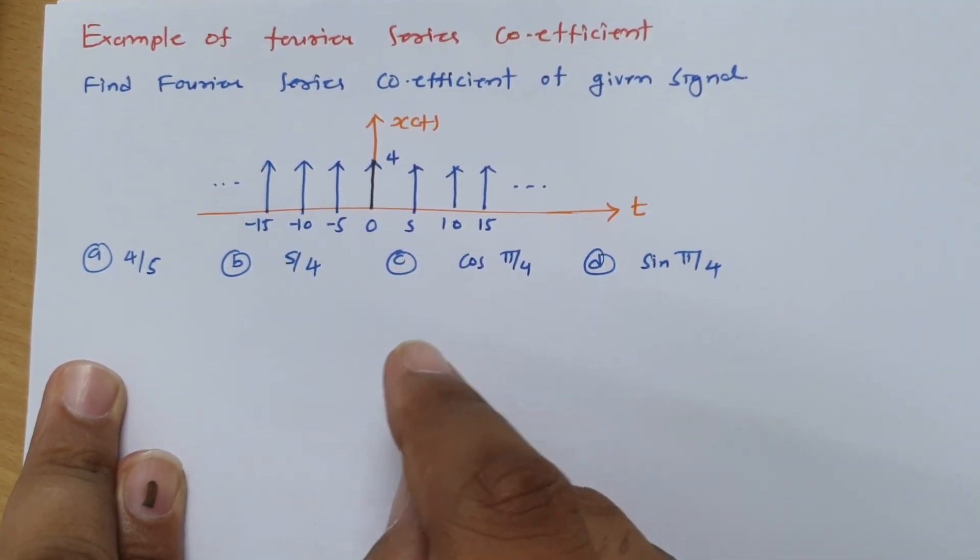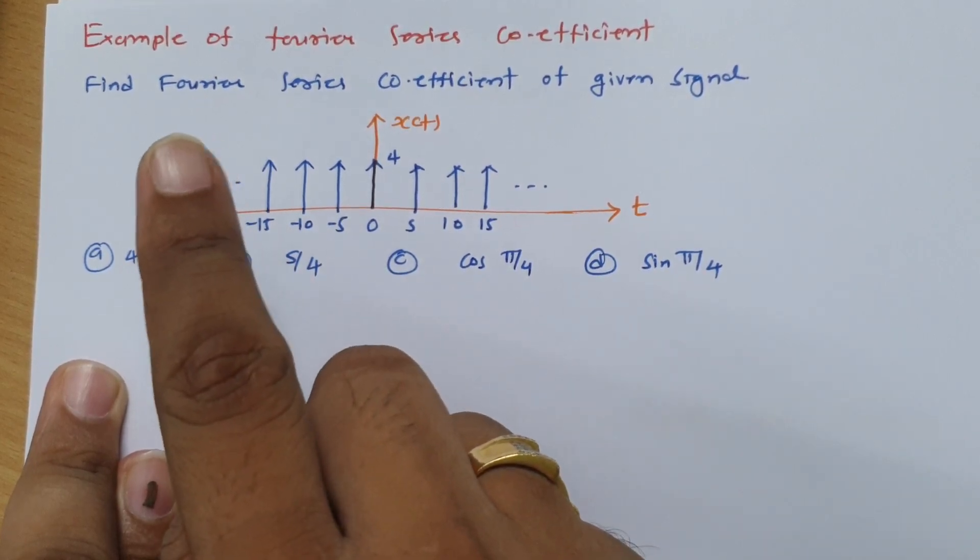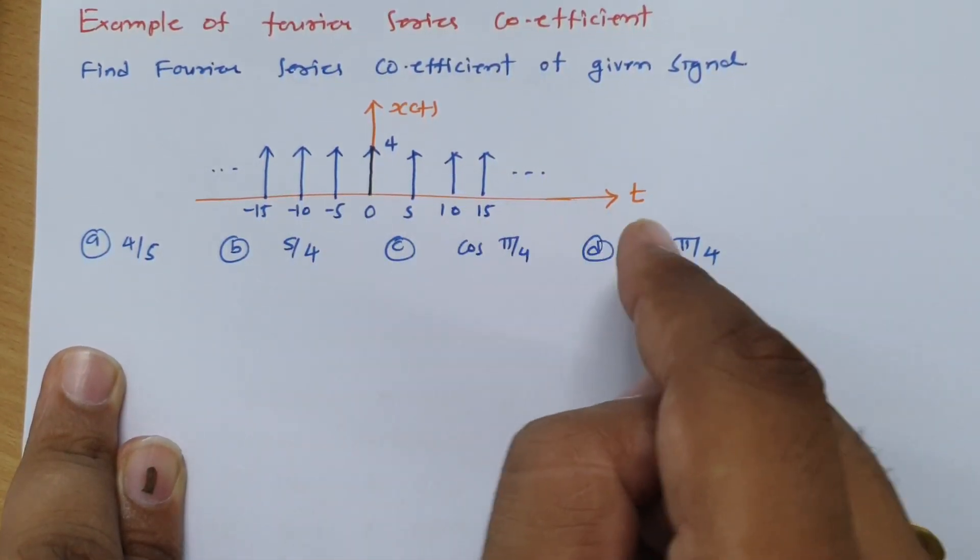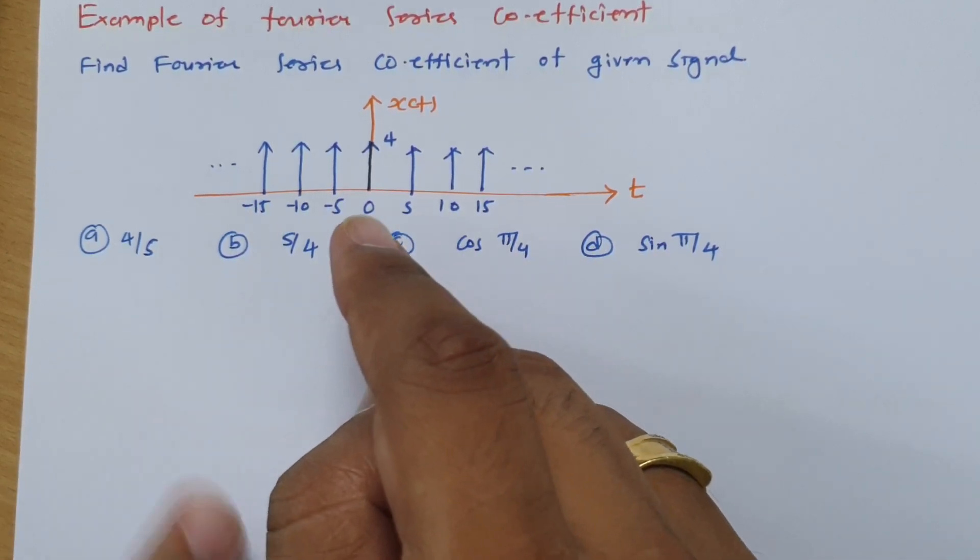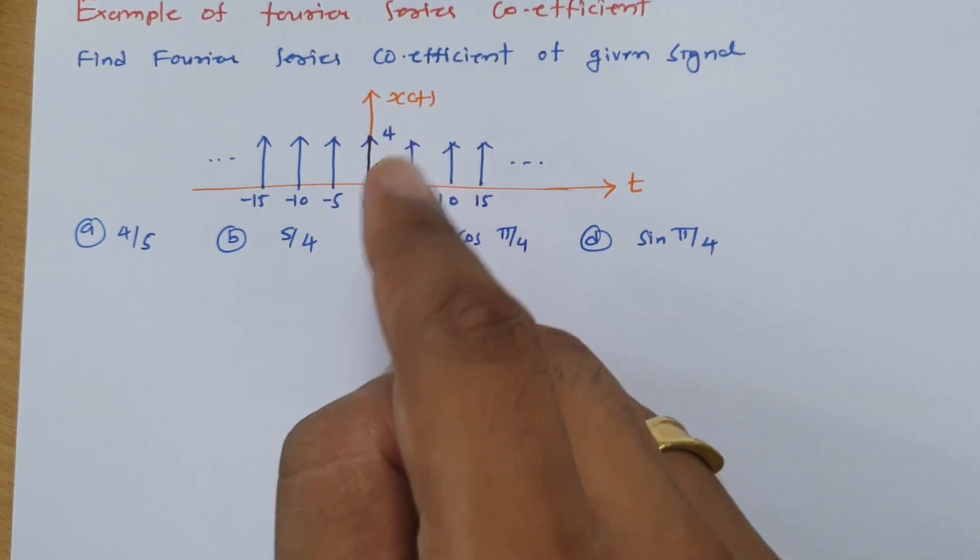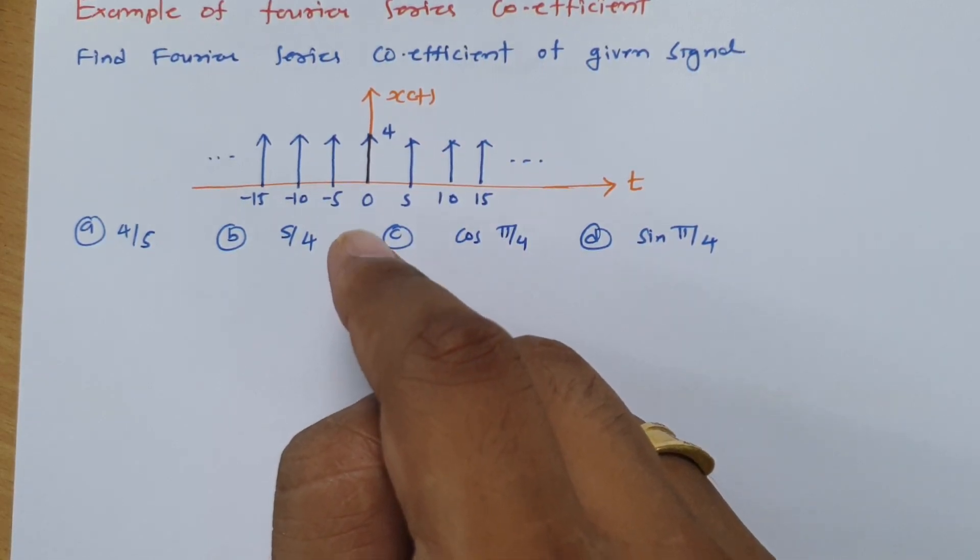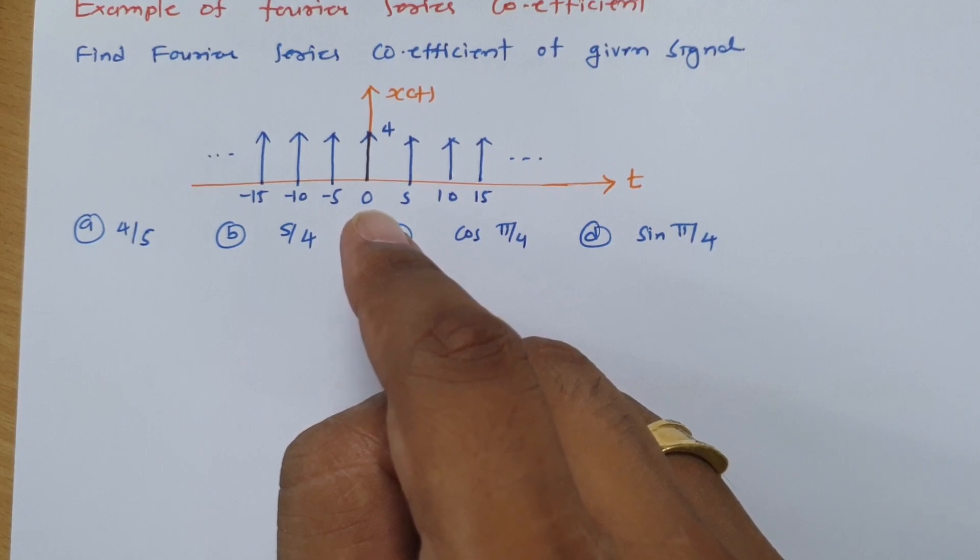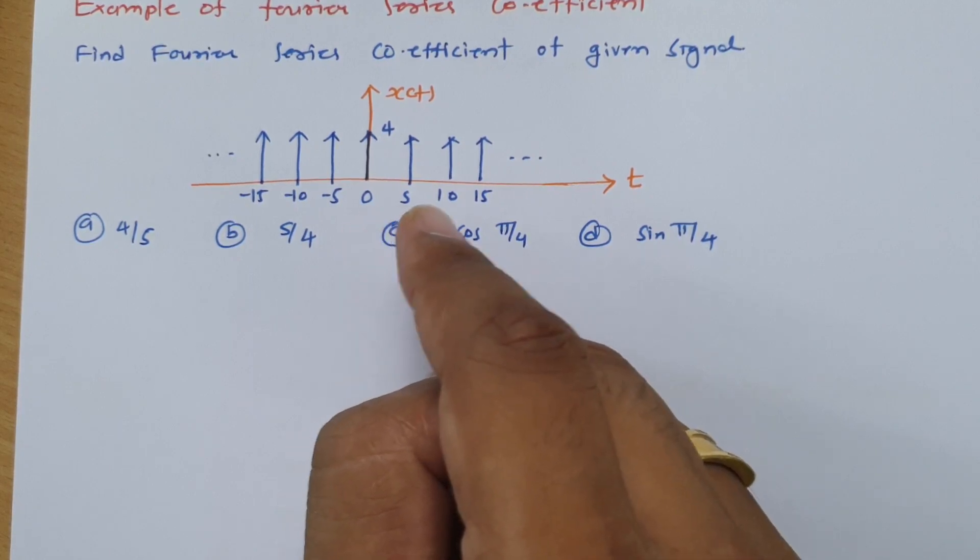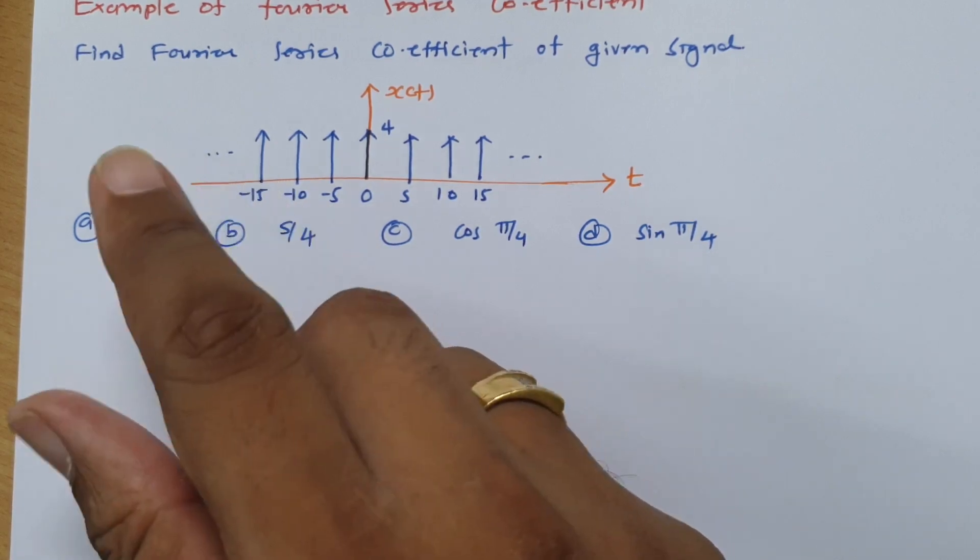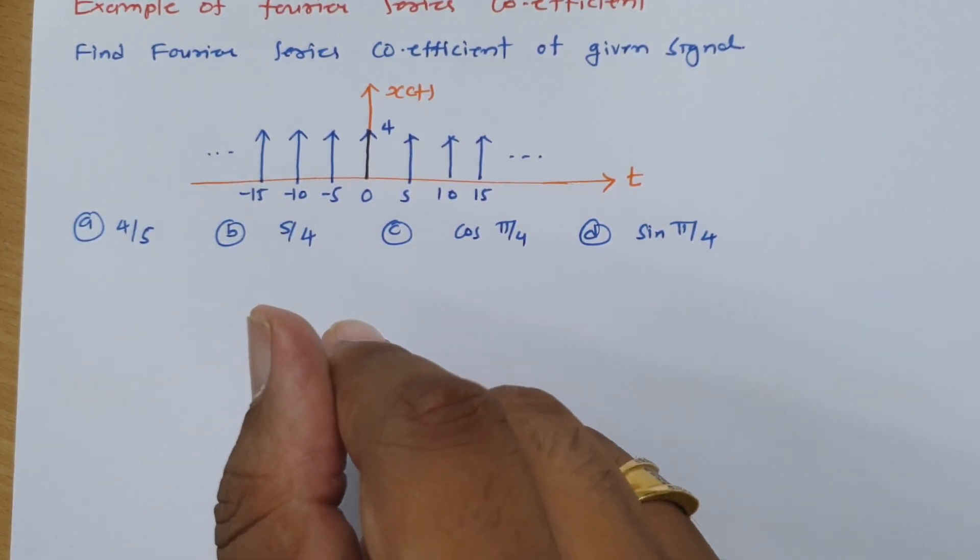To explain it, we have a question: find Fourier series coefficient of the given signal. You can see this is the given signal, an impulse train with magnitude 4. The timings of that impulse train are 0, 5, 10, 15 in the positive direction and minus 5, minus 10, minus 15 in the negative infinity direction.